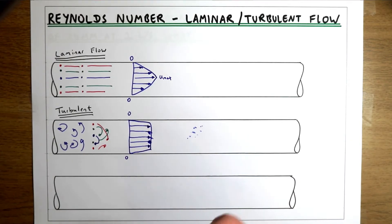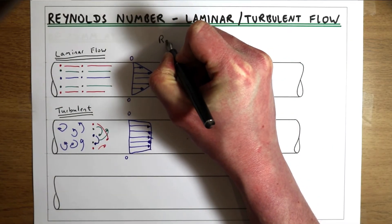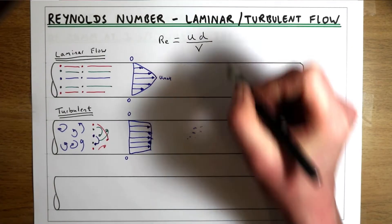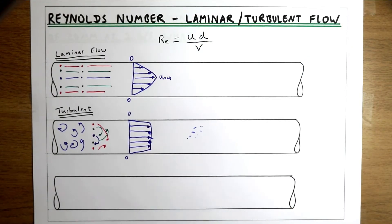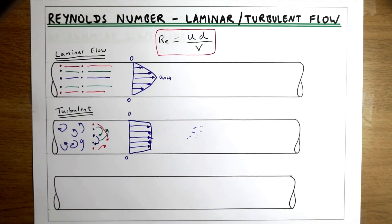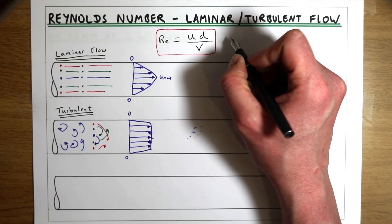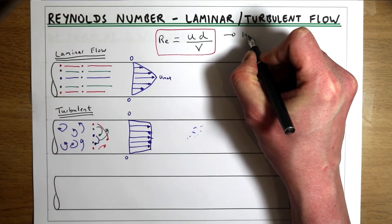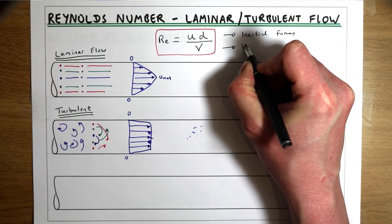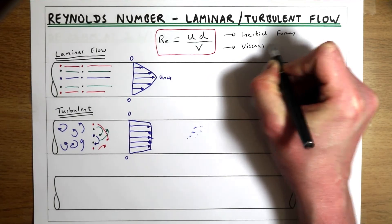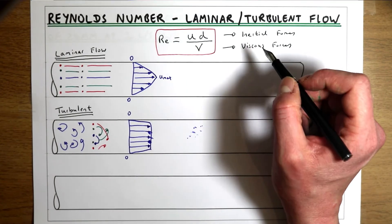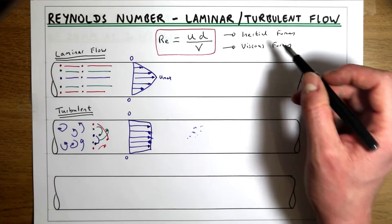We can ask how do we know whether it's going to be laminar or turbulent, and the answer is the Reynolds number of the flow. The Reynolds number is the velocity of the flow times the diameter of the pipe over the viscosity. This dimensionless number quantifies the ratio of the inertial forces to the viscous forces. If the viscous forces are dominant the flow will be laminar; if the inertial forces are dominant the flow will be turbulent.